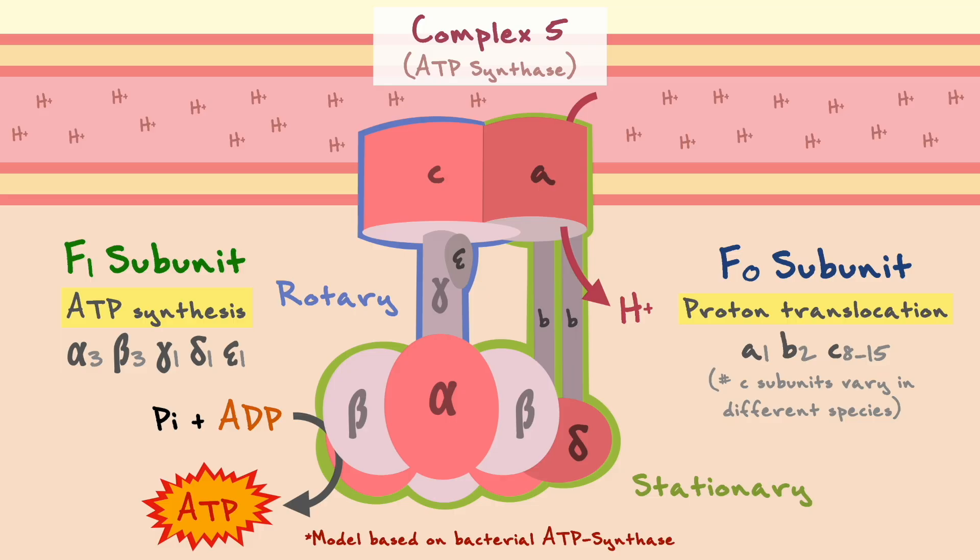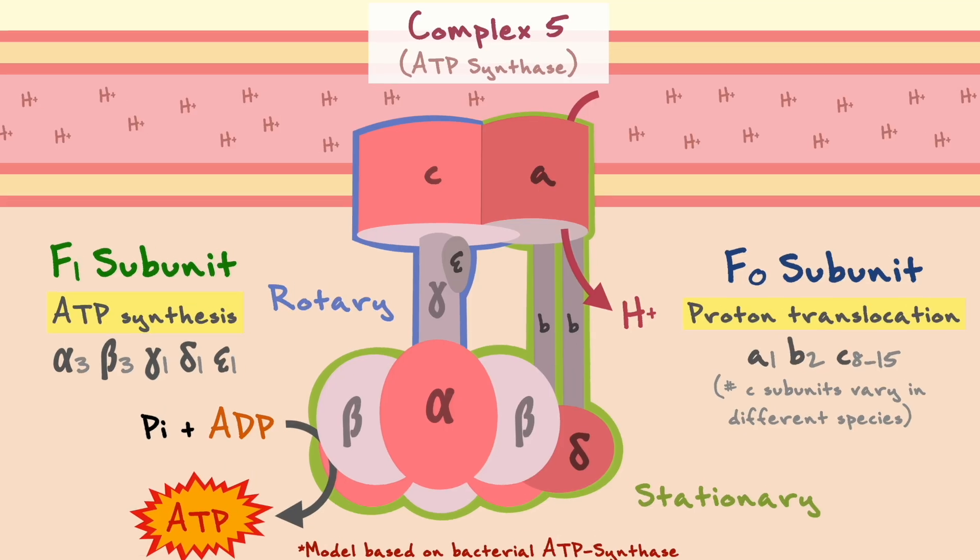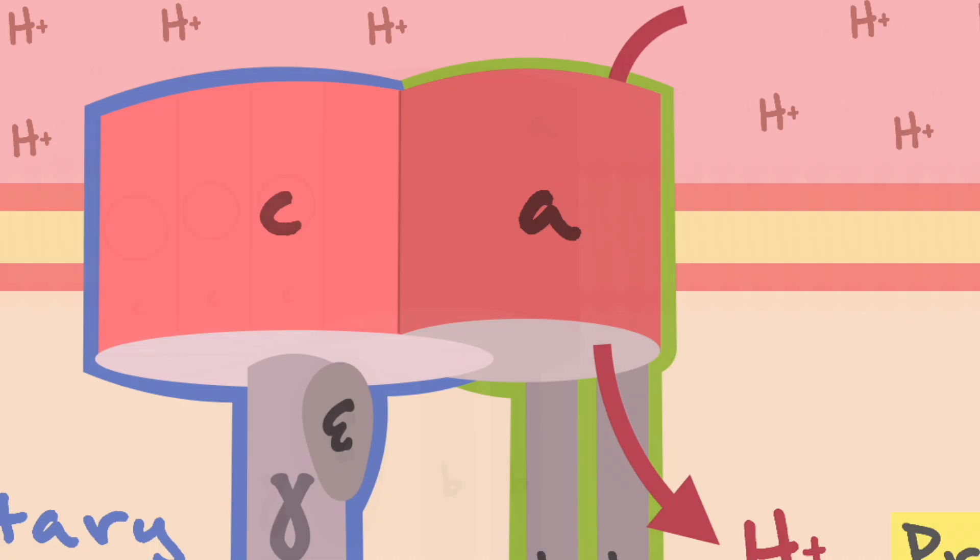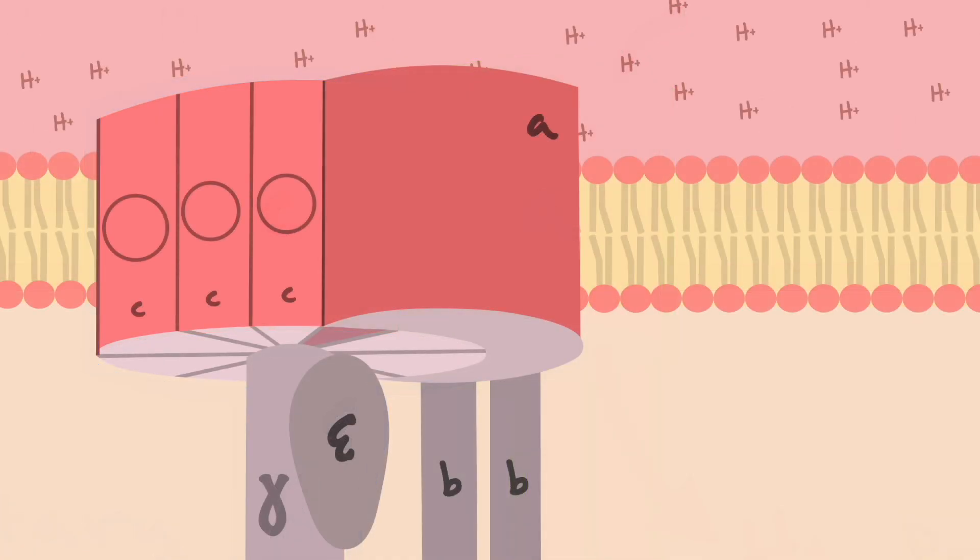The first aspect about ATP synthase that I want to consider in more detail is how the dissipation of protons makes the parts of this protein rotate. As such, let's zoom in on the inner mitochondrial membrane to get a good view of the A and C subunits.